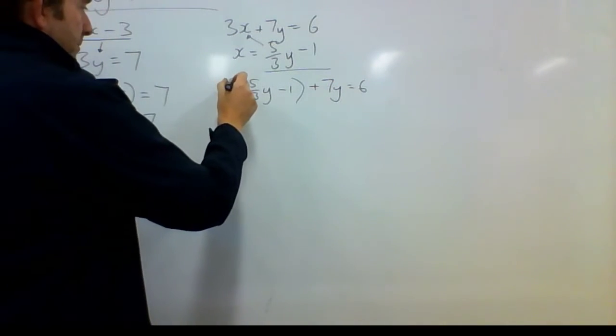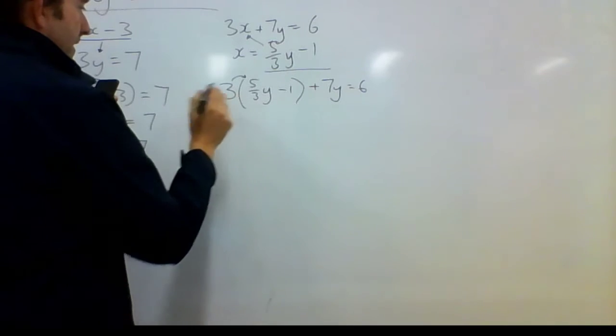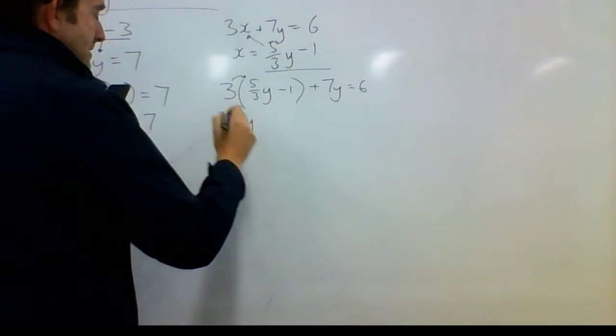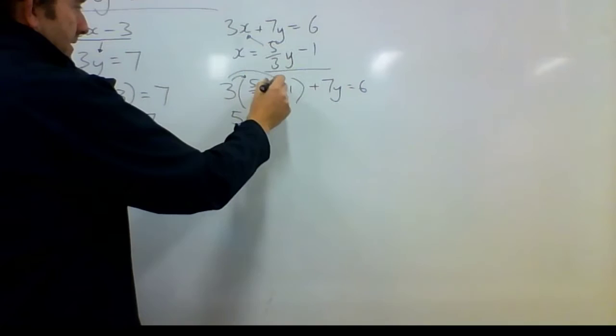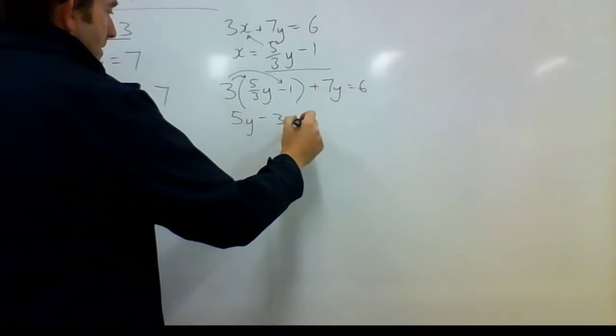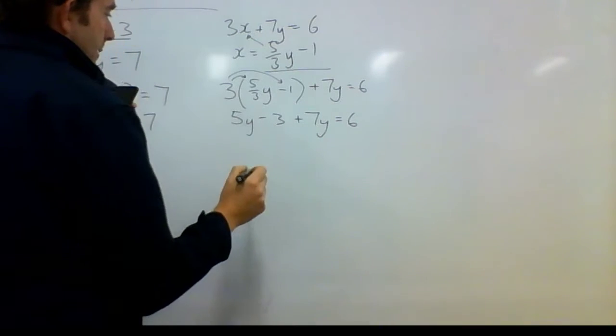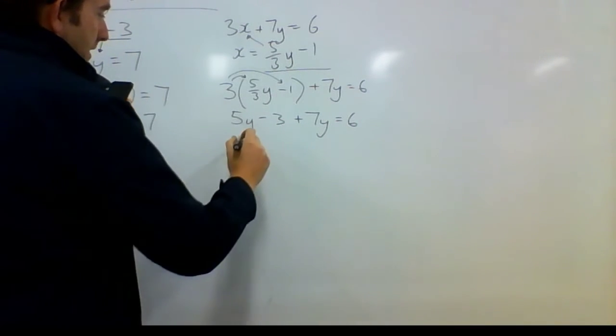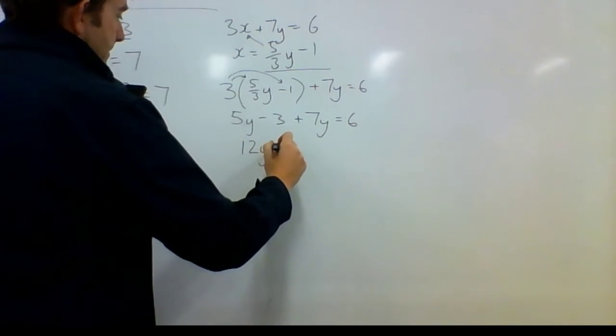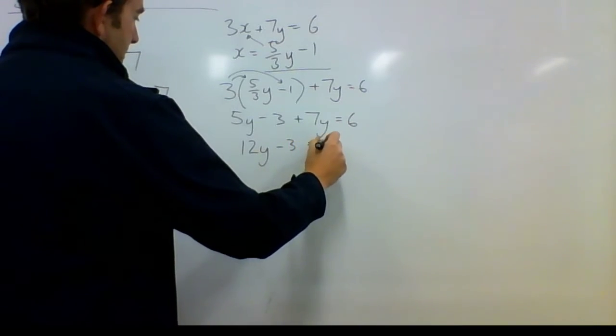So if I multiply this by this, that 3 and that 3 will cancel out and I'll have 5y. 3 times negative 1 is negative 3 plus 7y equals 6. 5y plus 7y is 12y. Negative 3 equals 6.